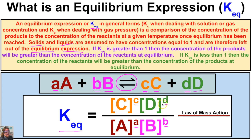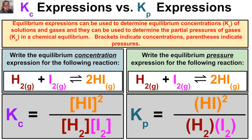We can also calculate equilibrium pressures the same way, except we use parentheses instead of brackets. Brackets refer to concentrations whereas parentheses refer to pressures. Equilibrium expressions can determine equilibrium concentrations (Kc) of solutions and gases, or the partial pressures of gases (Kp). Brackets indicate concentrations of gases or aqueous solutions, whereas parentheses indicate pressures.